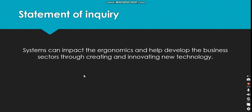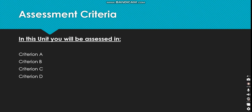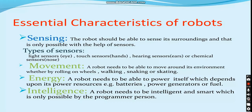The statement of inquiry is: systems can impact the ergonomics and help develop the business sectors through creating and innovating new technology. You're going to be assessed with the four criterions, which are A, B, C, and D.